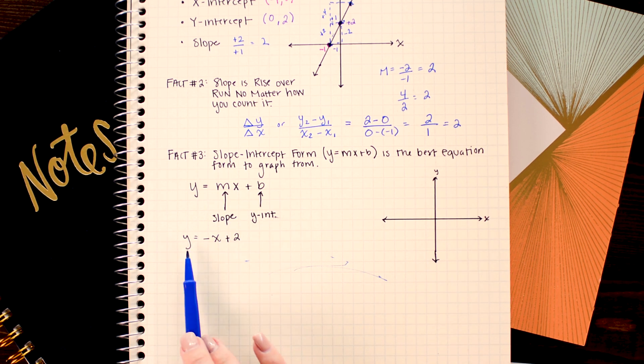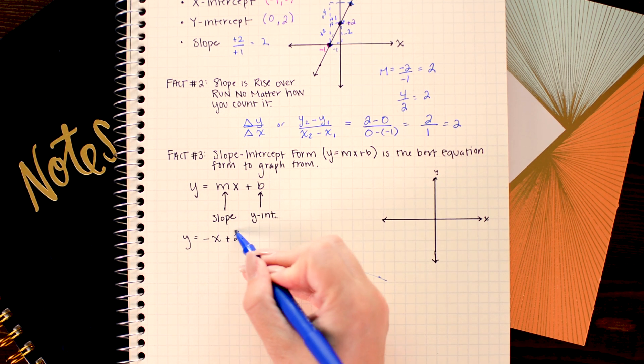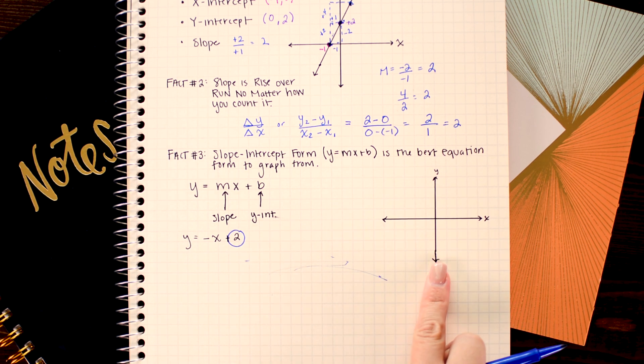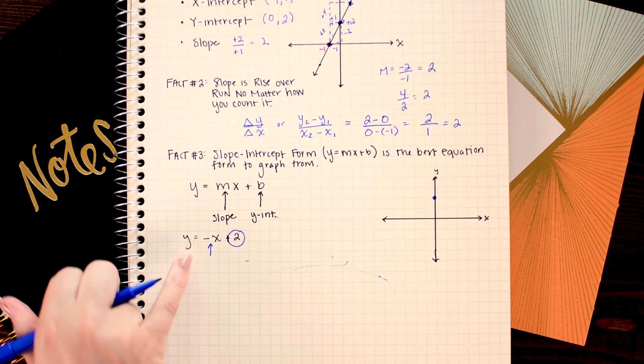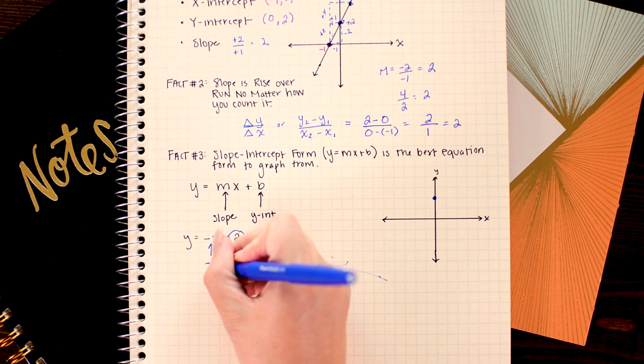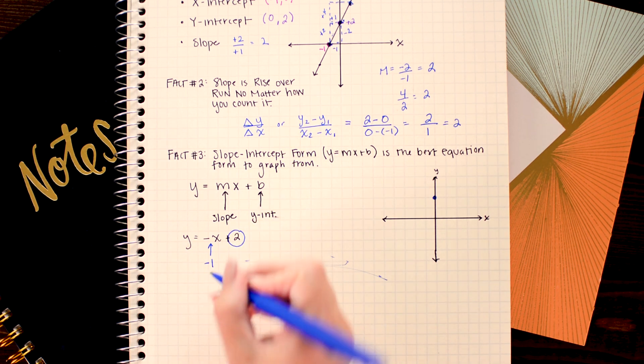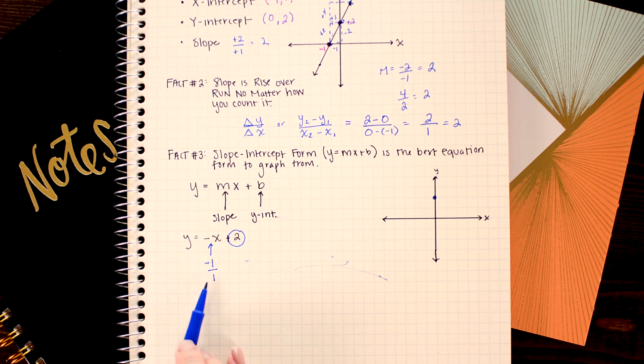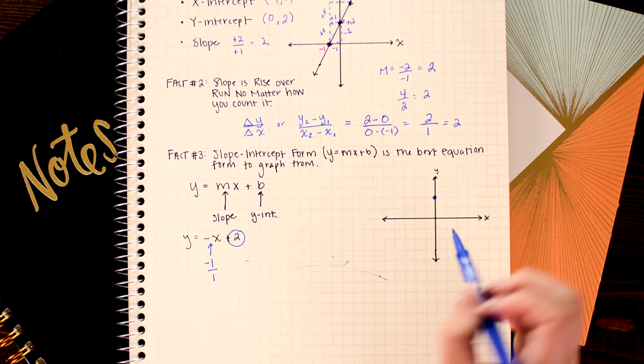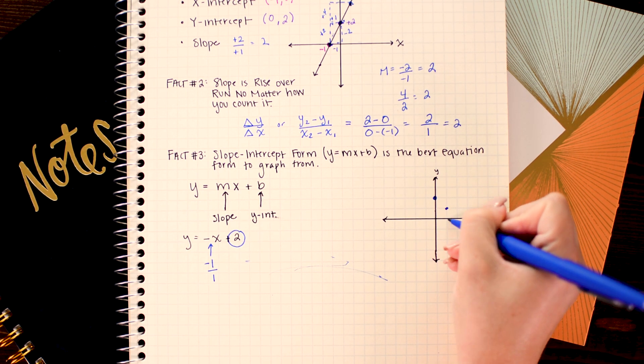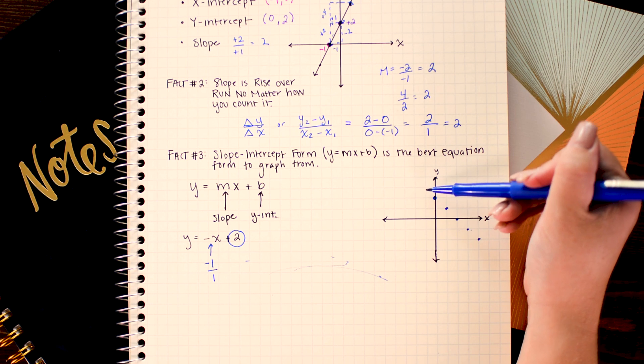So for example if I want to graph the line y equals negative x plus 2, all I have to do is take the y-intercept, so positive 2, and mark it on my y-axis and then take the slope which is the coefficient. Here I just have a negative sign so my coefficient is going to be negative 1. Now that's the slope which as we learned in the last step was rise over run. So this if I write it as a fraction is negative 1 over positive 1. All I have to do here is go to my point and apply that slope. So I'm going to go down 1, right 1, and likewise I could also go up 1 if I go negative 1 to the left.